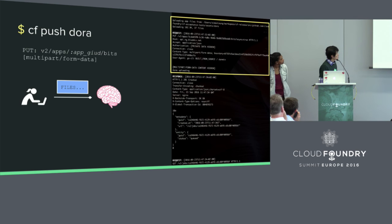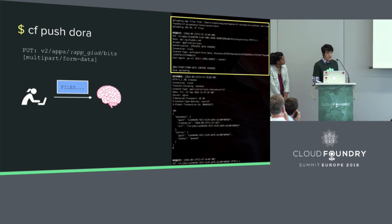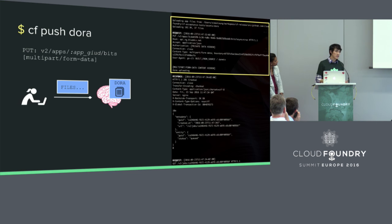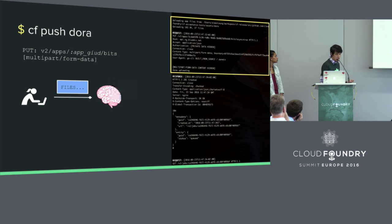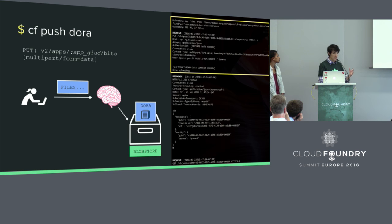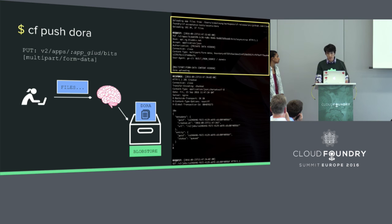All the app bits and file source code are uploaded in the format of multipart form data. After the files are uploaded, CC will receive all these files and create what we call a package. A package is essentially all the source code and app bits that your application needs in order to run. CC then takes this package and stores it into something we call the blob store — a backend storage that Cloud Controller uses to store things like all the files, buildpack caches, and binaries. Now we have the source code, the app, and the route created, and it's time to start the application.